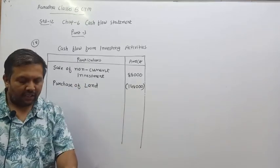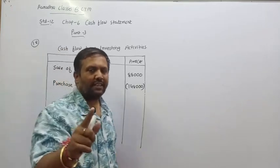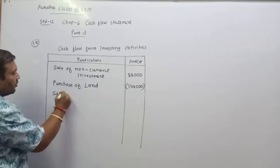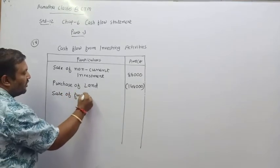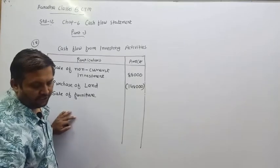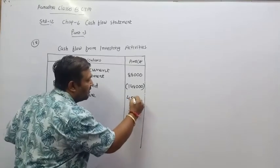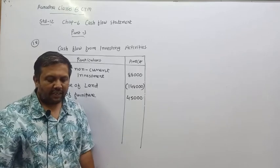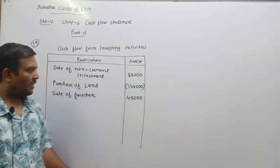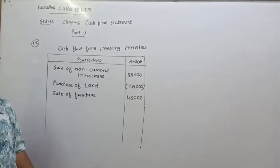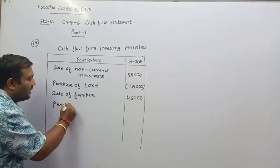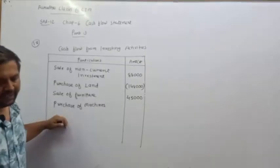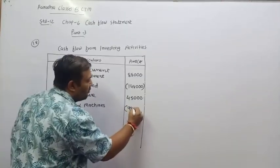Third item: sale of furniture. Furniture is a fixed asset. Sale means money is coming in — inflow — so write sale of furniture as positive: 45,000. Fourth item: purchase of machine. Machine is a fixed asset. Purchasing means money is going out — outflow. Write purchase of machine as minus: 98,000 in brackets.